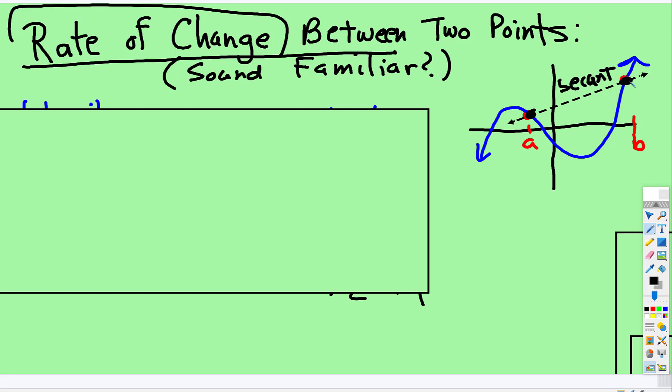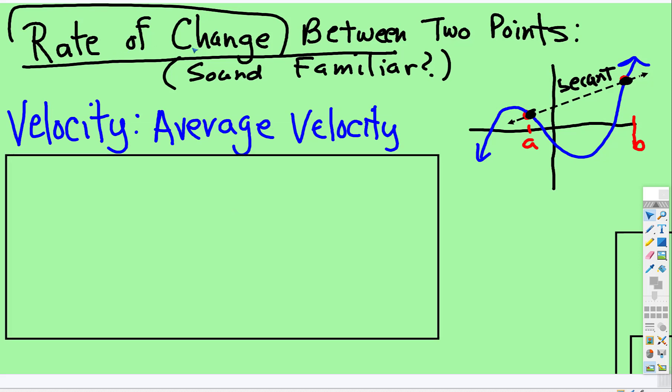And then the line that goes from point A to point B is called the secant line. And the slope of the secant line is average velocity or rate of change or slope. And in this case we would say m subsecant and that means the same thing as average velocity between point A and point B.